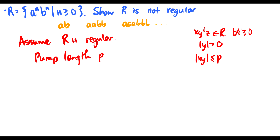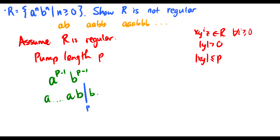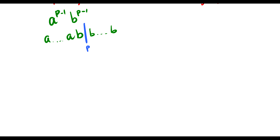Let's take the string a^(p-1) b^(p-1). We're using the pumping length so we know where x and y must fall. Since x y must be less than or equal to p, we can take all the a's, then one b — that's where pump length p cuts off — and the rest of the b's continue. So we have to choose our x and y somewhere before p. Case one: we pick all the a's to be x and pump the b, so y equals b.